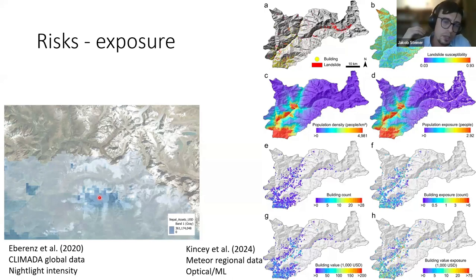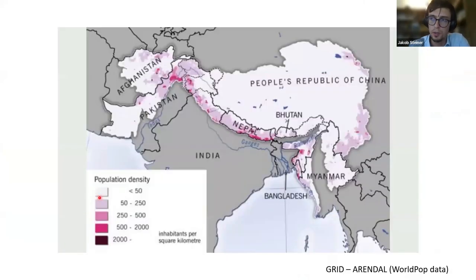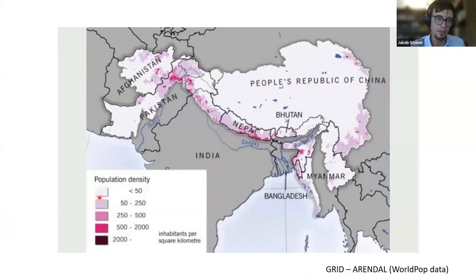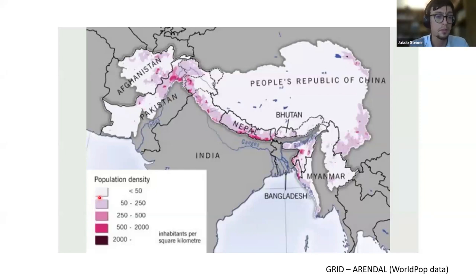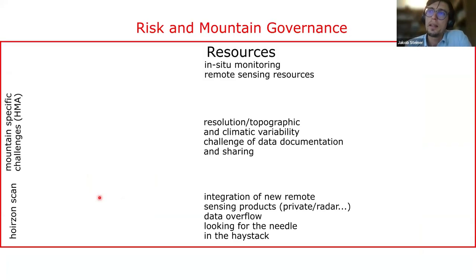Coarse global products have merit at large scale but fail at smaller scale in complex mountain topography. We need higher-resolution products tailored to these environments if we want to be responsive to individual events. Population distribution across High Mountain Asia is still poorly known — I can tell you of many discussions at ICIMOD where even mountain region population data is still pretty poor. We have to invest a lot more to understand where people in the region actually are.